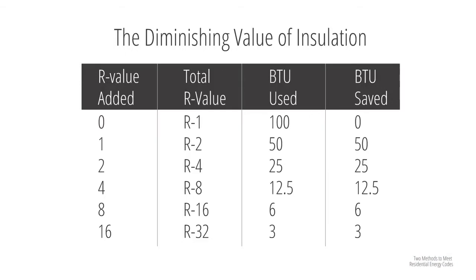To understand this, let's look at a simple example — energy lost through the ceiling. In this example, we start with only a one-inch thick piece of drywall for our ceiling, initially uninsulated. Looking at the first row of the table, we have zero R value added, giving us a total system R value of R1. The BTUs used is 100, and we've saved no energy because we've added no insulation.